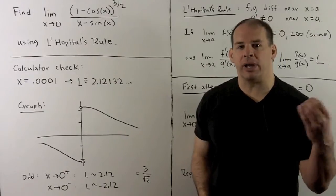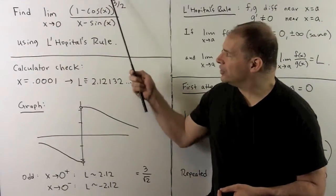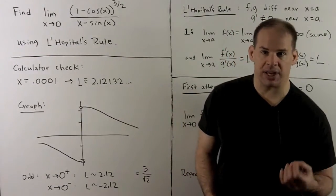To start, we can try evaluating at zero and see if a number comes out. We get zero over zero, so that suggests that we try L'Hôpital's rule.